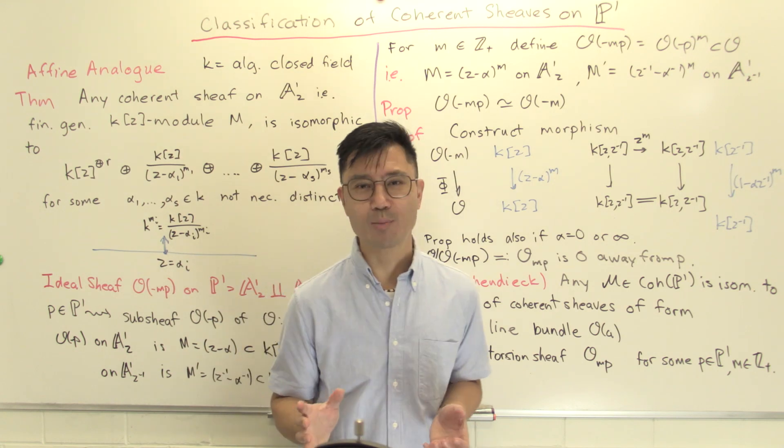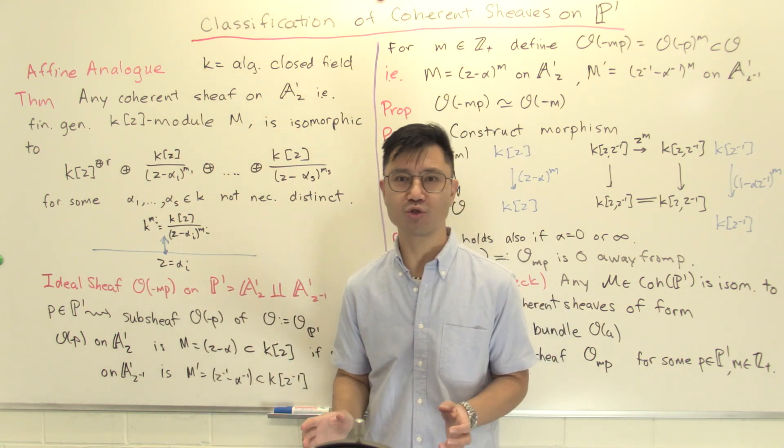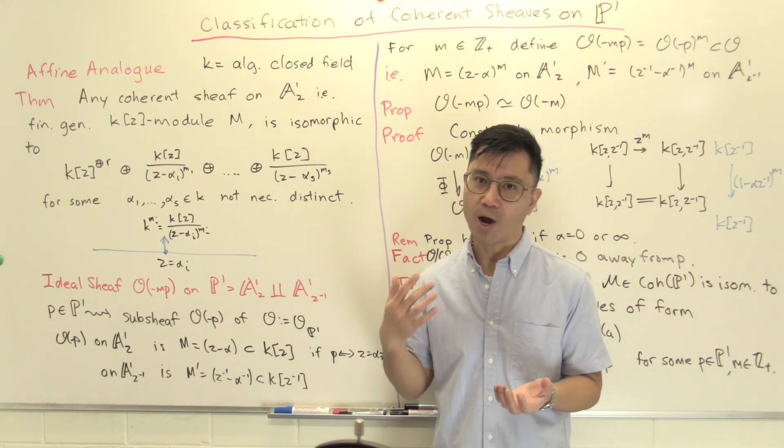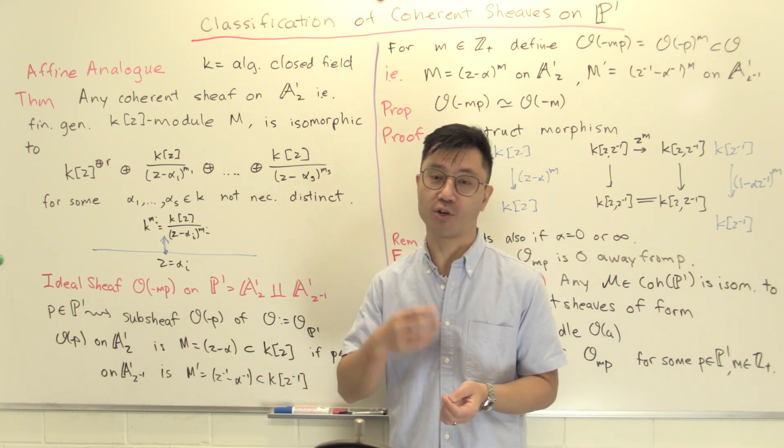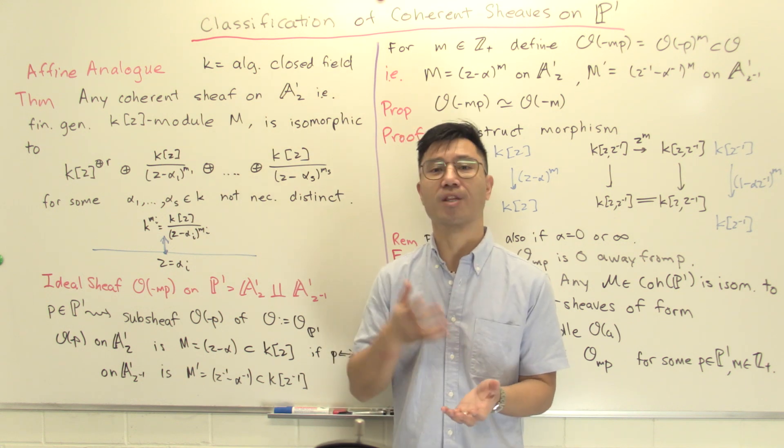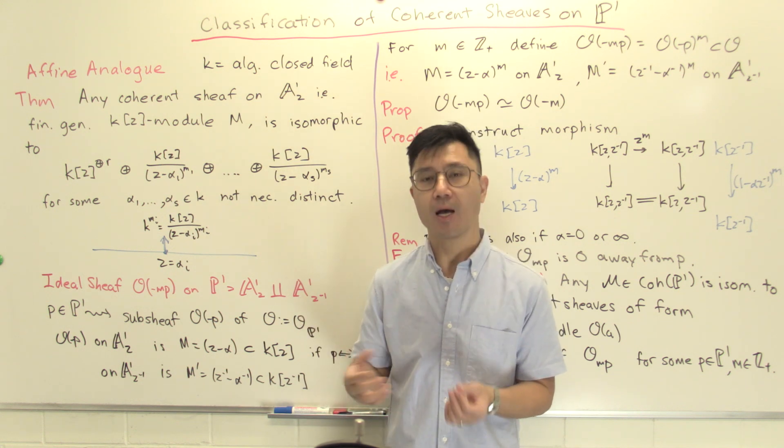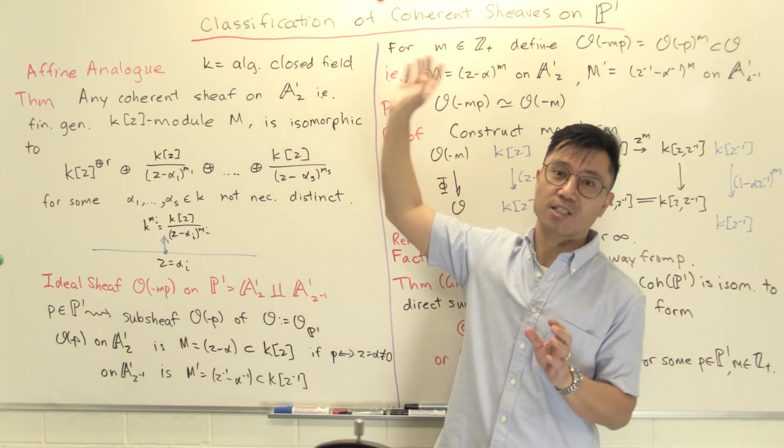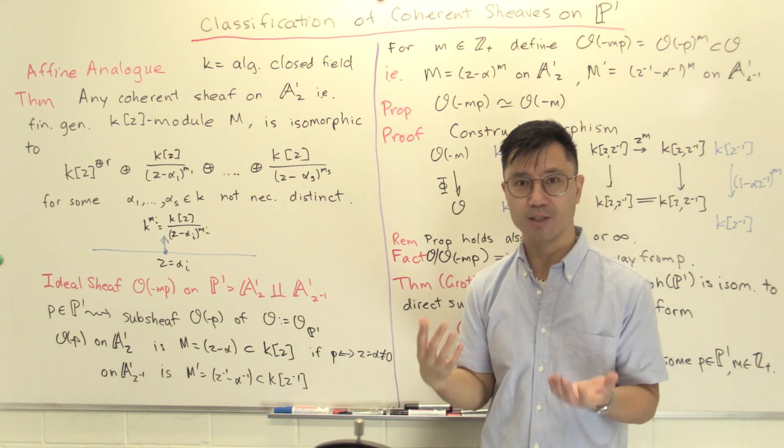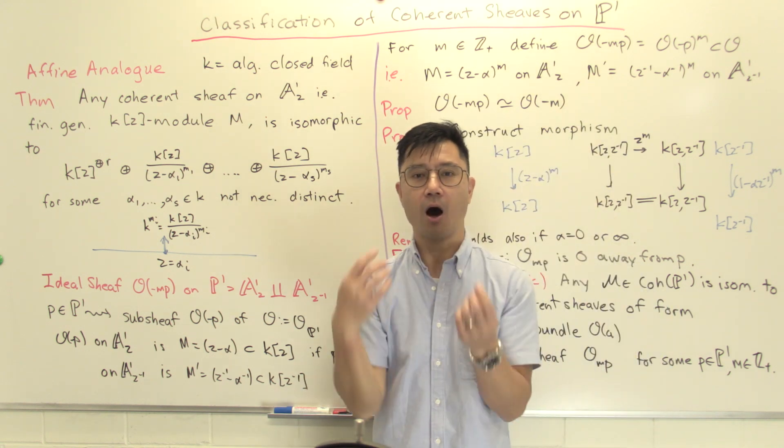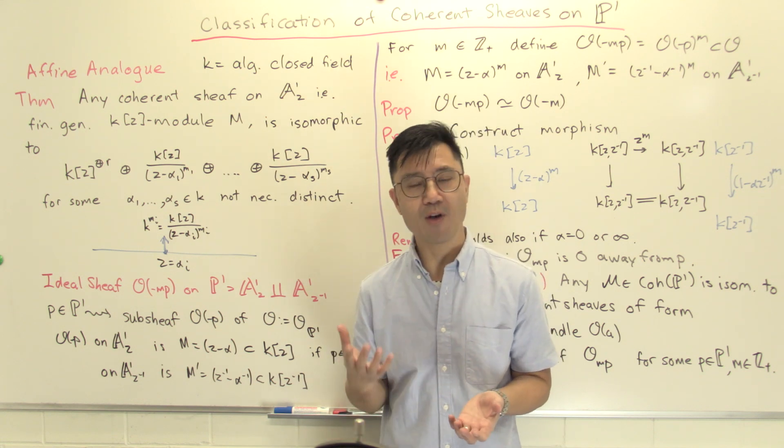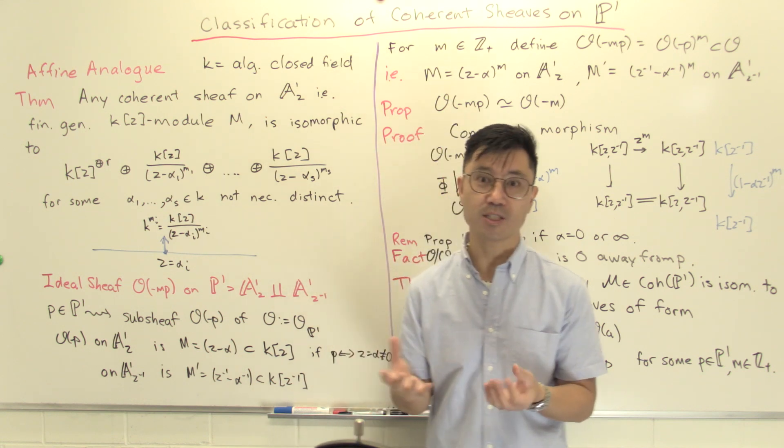Hi, I'm Daniel Chan from UNSW Sydney. Welcome to another adventure in pure mathematics. Coherent sheaves on varieties can be thought of as generalizations of the notion of modules over a commutative ring to the case of varieties. I want to illustrate this by giving you the classification of coherent sheaves on P1, which is due to Grothendieck, and it nicely shows how the theory of finitely generated modules over the polynomial ring in one variable extends into this projective setting.